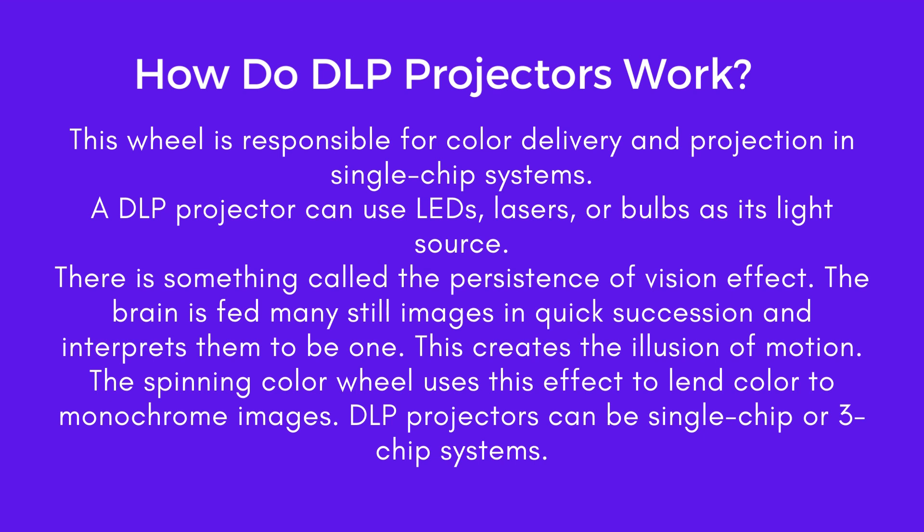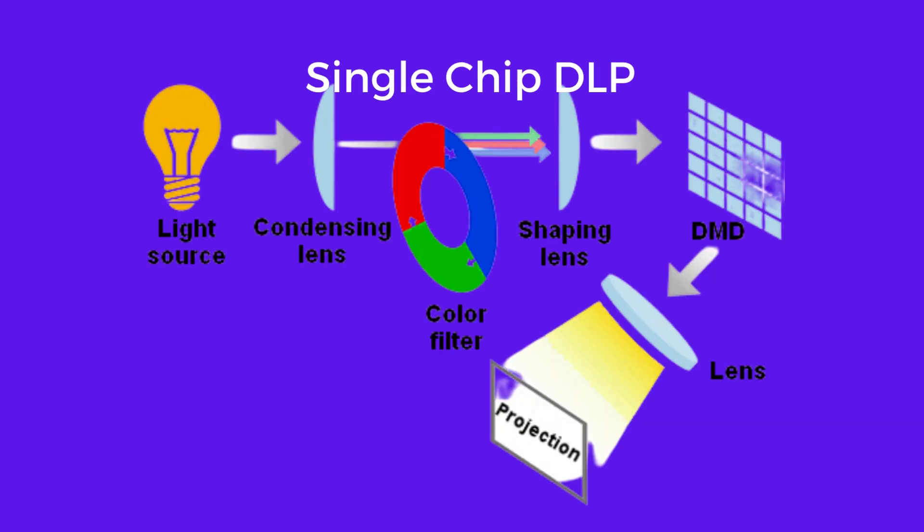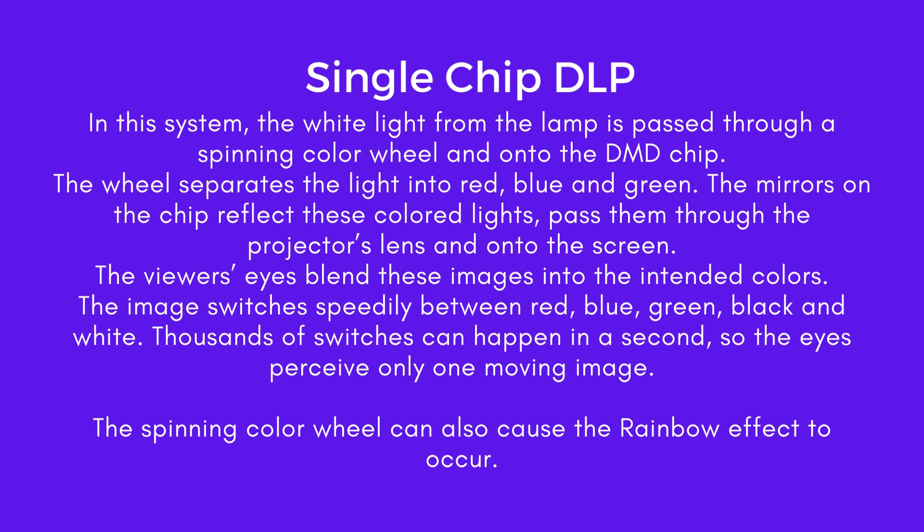DLP projectors can be single-chip or three-chip systems. In the single-chip DLP system, white light from the lamp is passed through a spinning color wheel and onto the DMD chip. The wheel separates the light into red, blue, and green. The mirrors on the chip reflect these colored lights, pass them through the projector's lens, and onto the screen. The viewer's eyes blend these images into the intended colors. The image switches speedily between red, blue, green, black, and white — thousands of switches can happen in a second, so the eyes perceive only one moving image. The spinning color wheel can also cause the rainbow effect to occur.